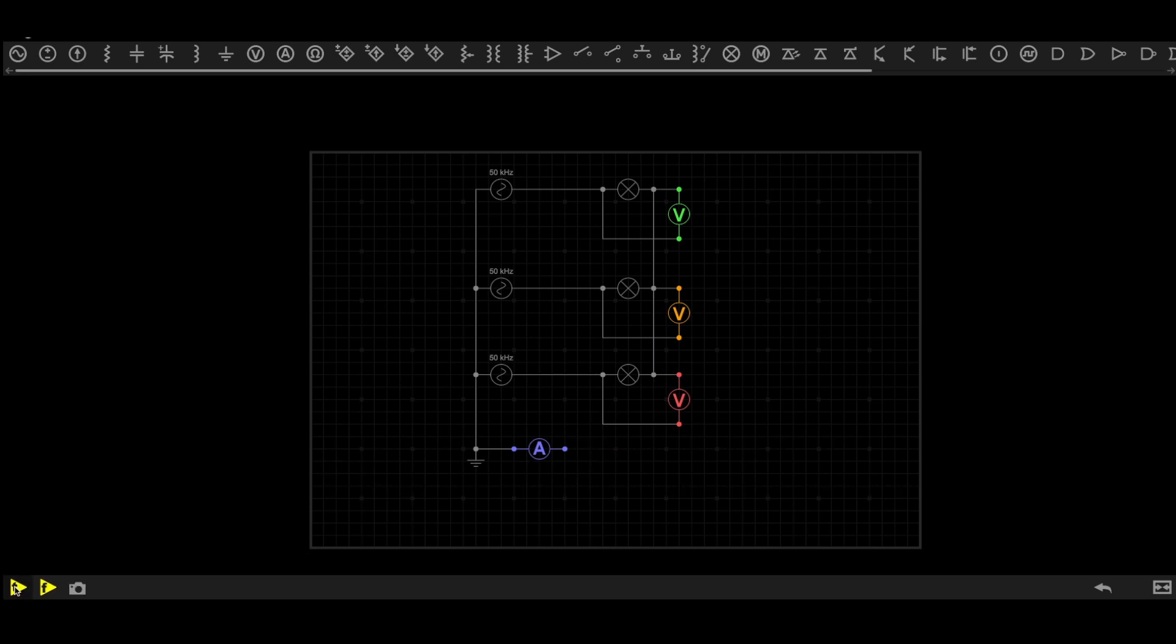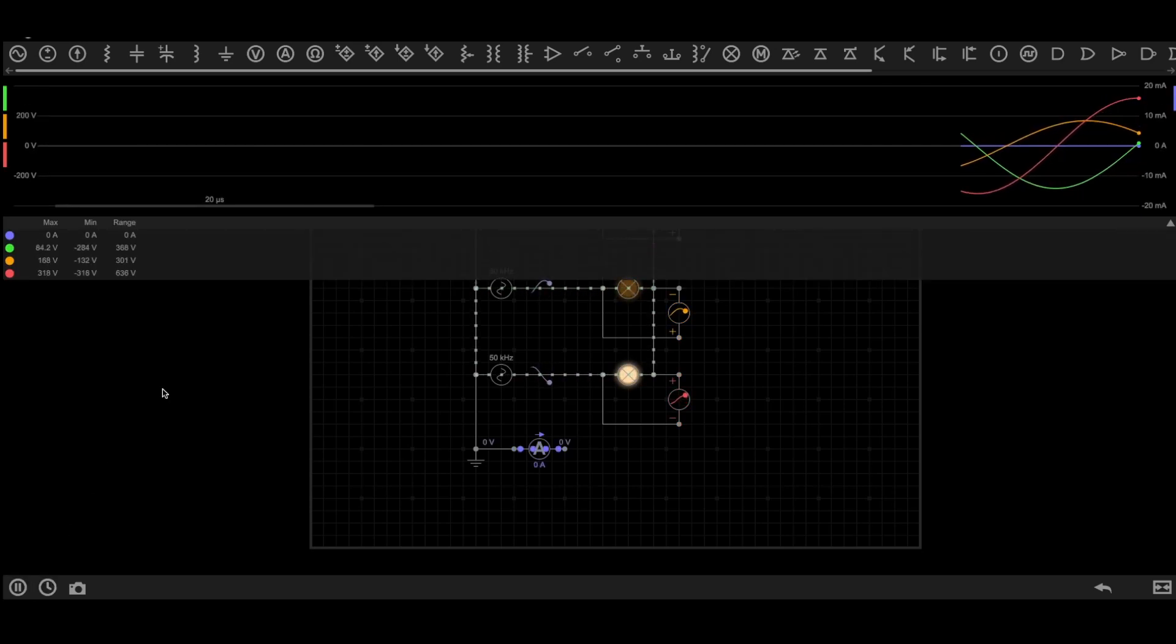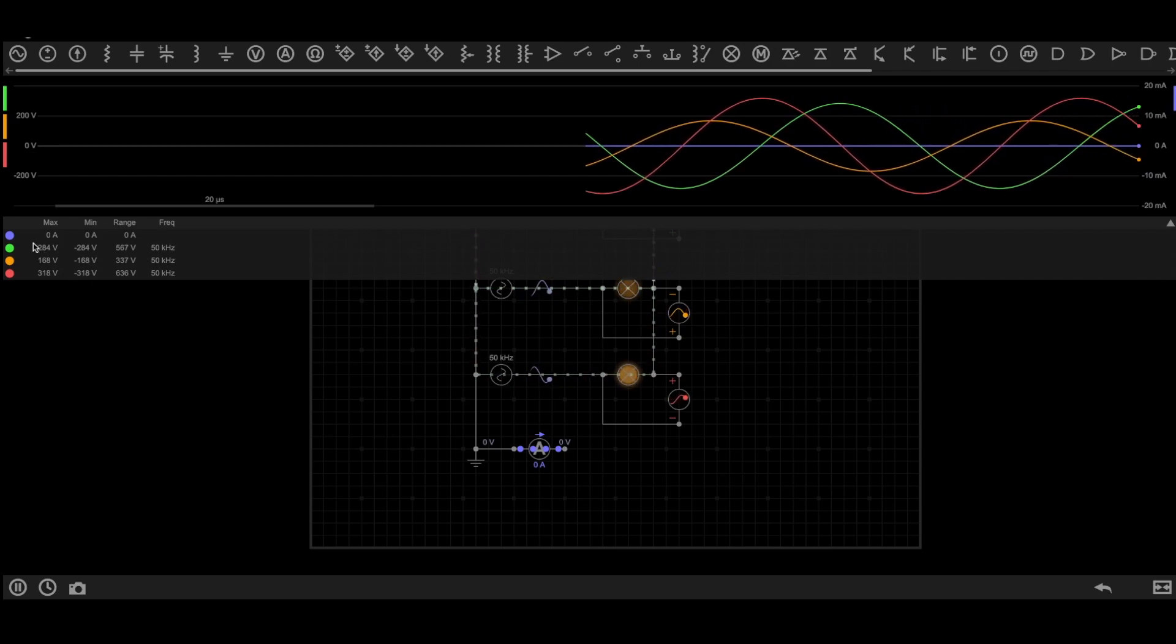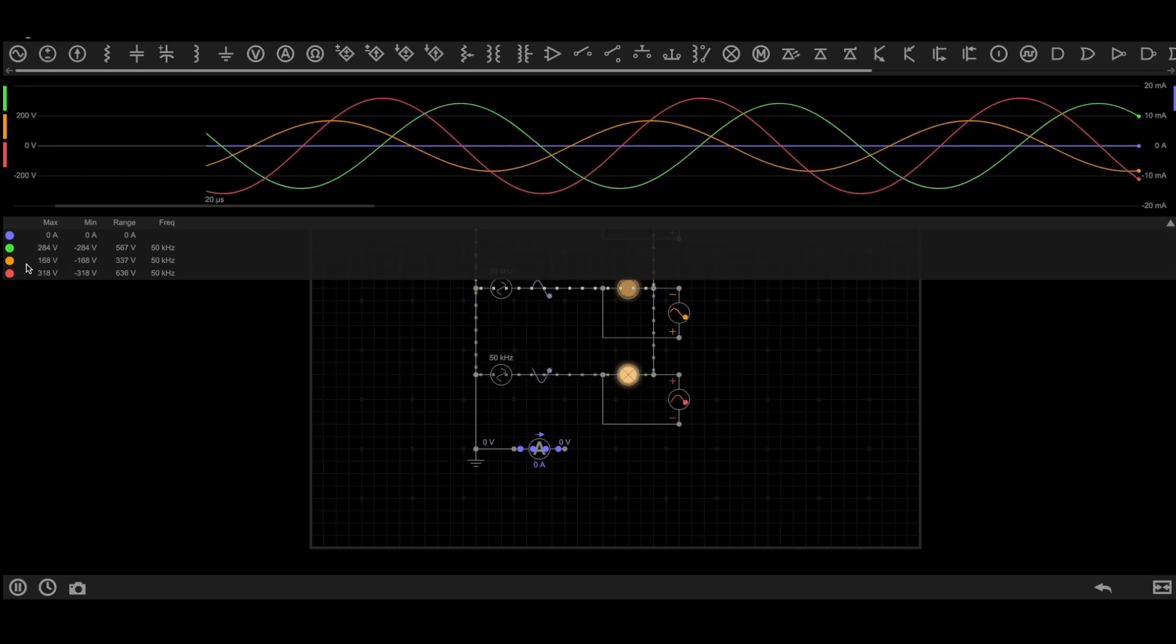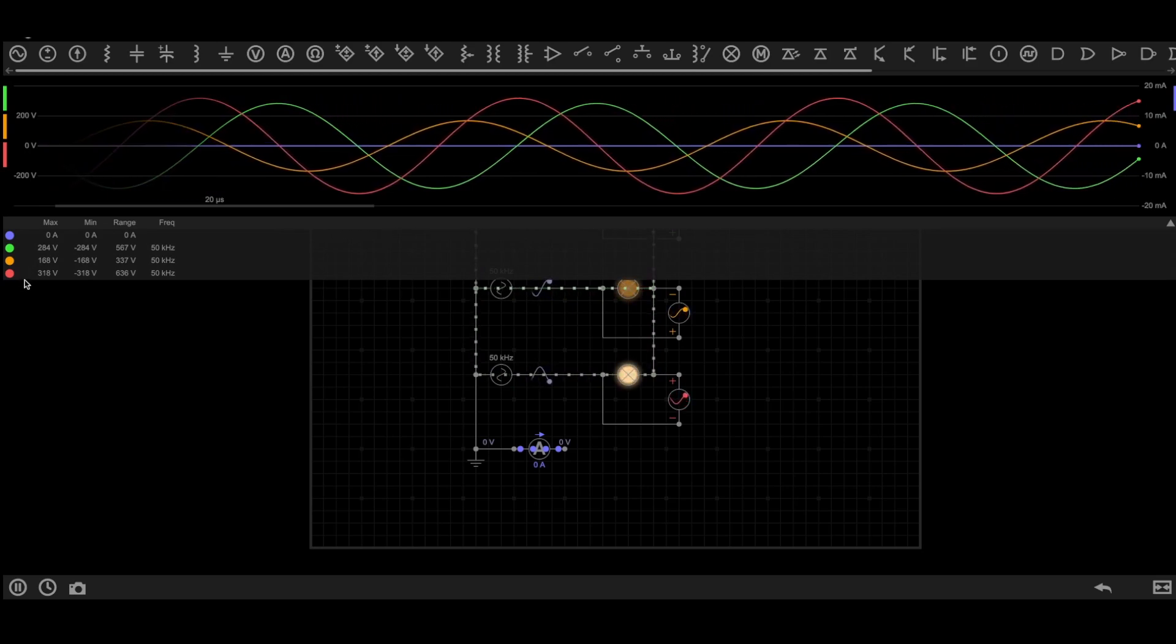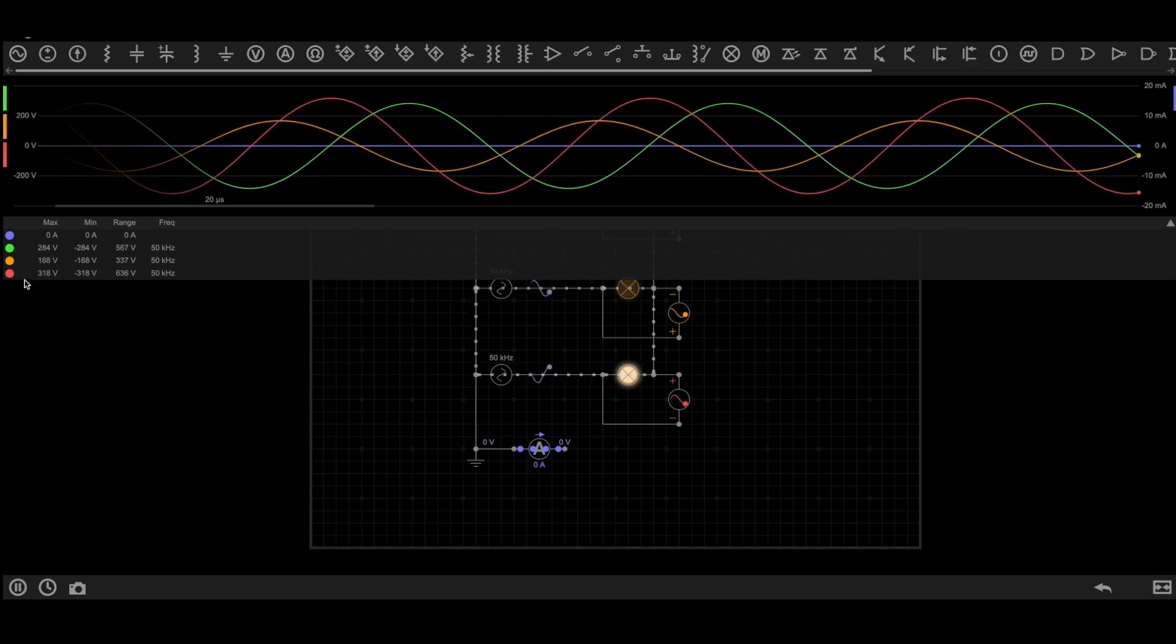As you can see from the reading of the voltmeter, voltage across the load is no more constant. LED one is having 284 volts, LED two is having 168 volts, and LED three having 318 volts. Our LEDs are meant to handle only 250 volts.